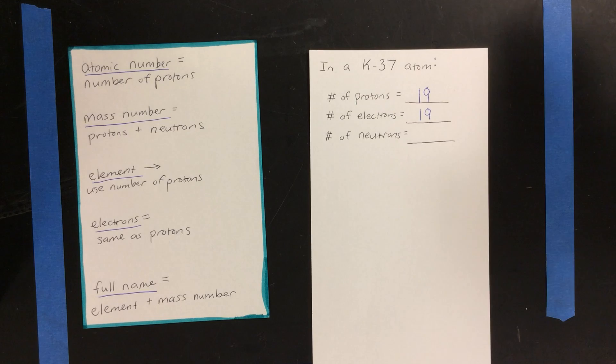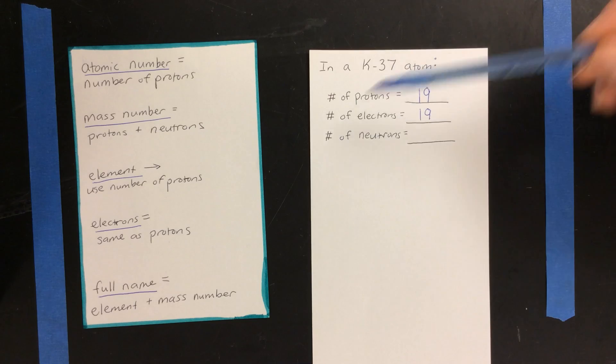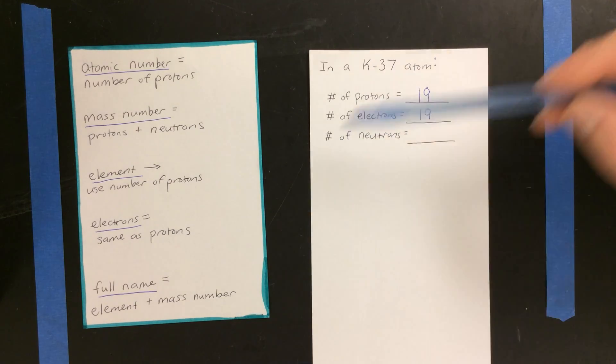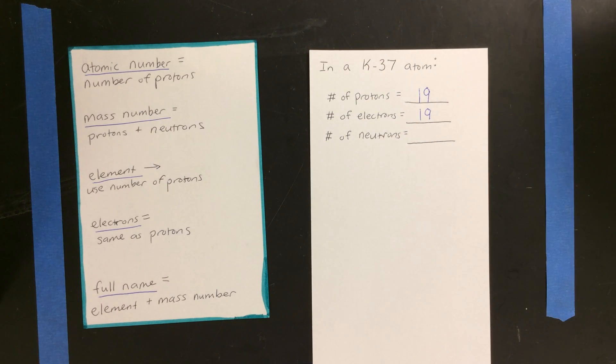The last one, and the hardest one to figure out, is the number of neutrons. So to do this, we have to realize that this full name here, that 37, is the mass number. That means that 37 means that there's 37 protons and neutrons all together.